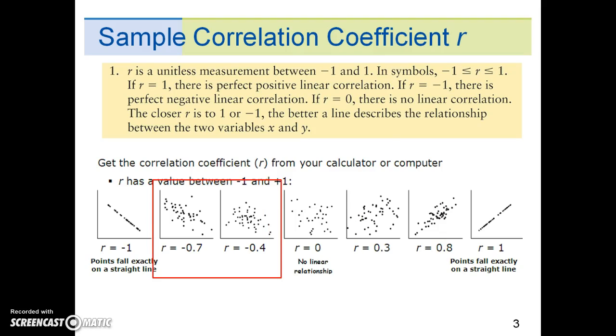Any value between 0 and negative 1 implies a low, moderate, or high negative correlation, depending on the value.